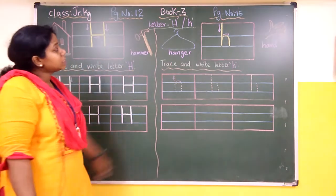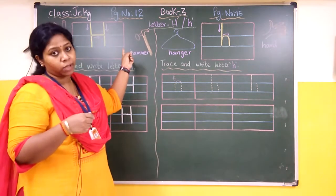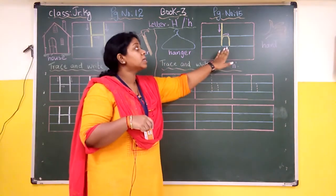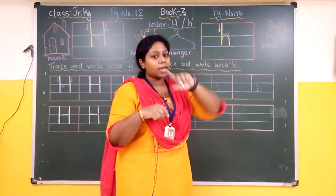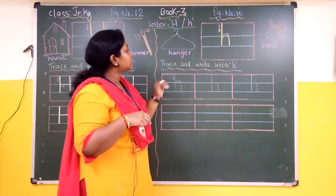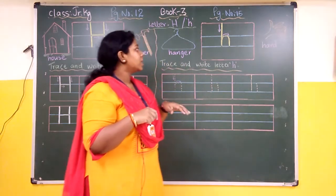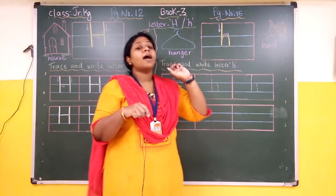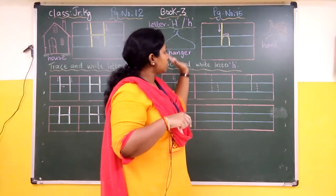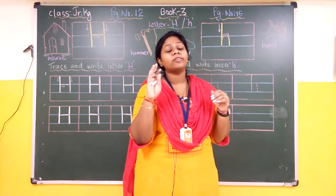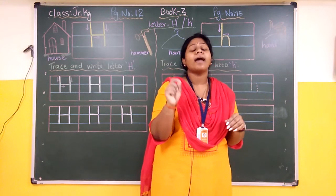Now going to the next part, that is page number 15. After finishing page number 12, you will go to page number 15. On page number 15 it's small letter H. We have already learnt capital letter H, now we learn how to write small letter H. So before that, two or three vocabulary words we will see. Hanger — H-A-N-G-E-R, hanger. Coming to the next word, that is hand — H-A-N-D, hand.